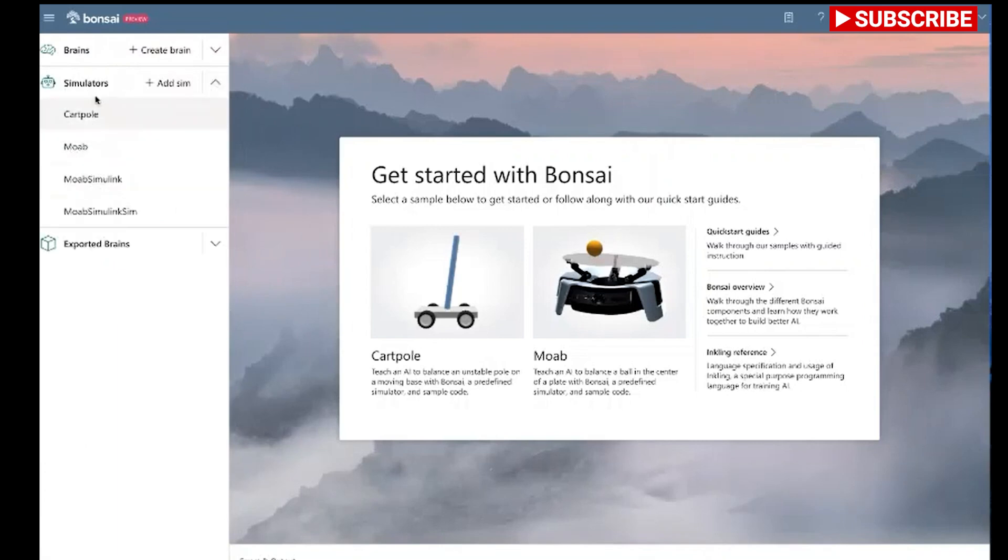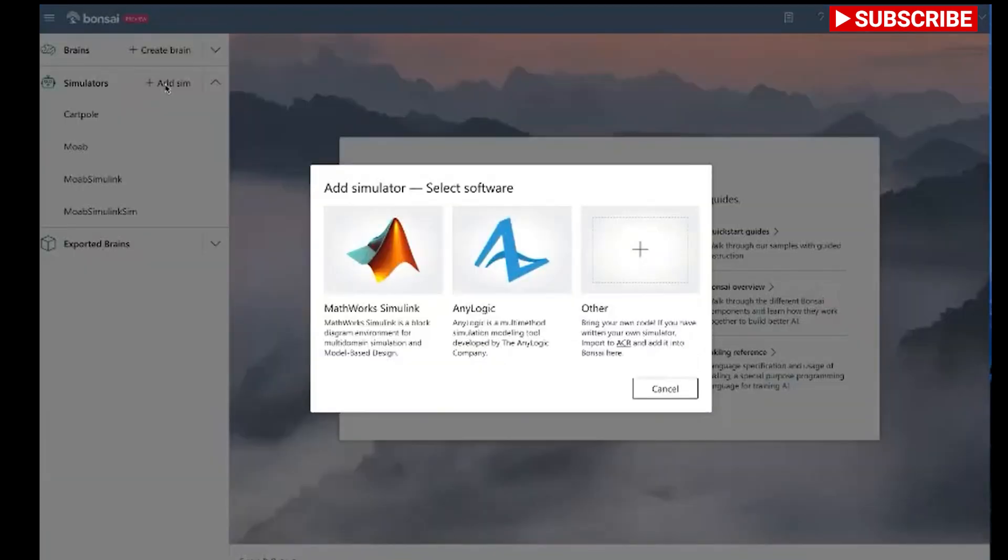Bonsai enables you to codify what an AI should learn by using human-friendly statements such as avoid and maximize. This means you don't have to explicitly define detailed reward and terminal functions. Bonsai includes integrated support for popular simulation software packages such as Simulink, Matlab, and AnyLogic. Your simulation developers can therefore build machine teaching simulations by using familiar software.